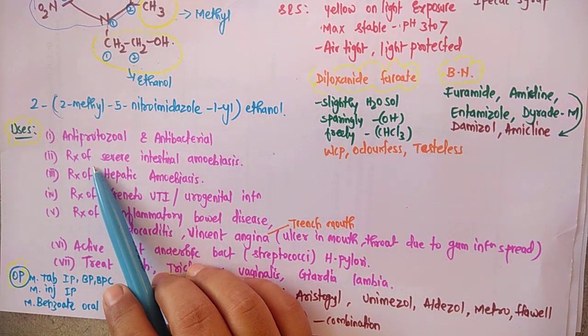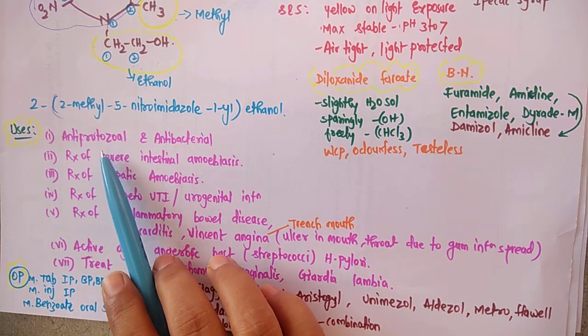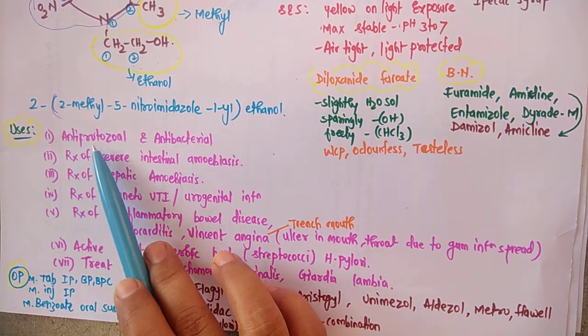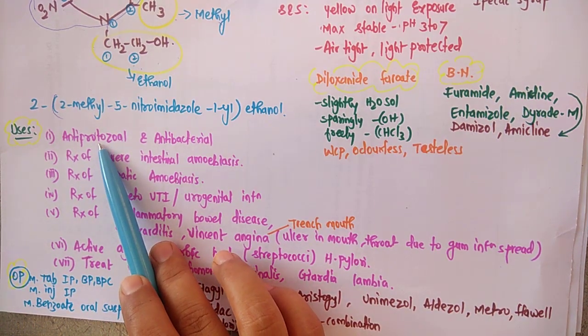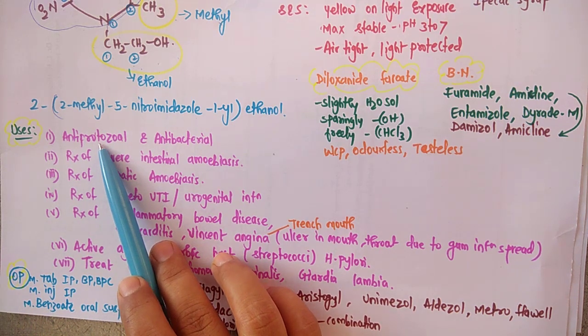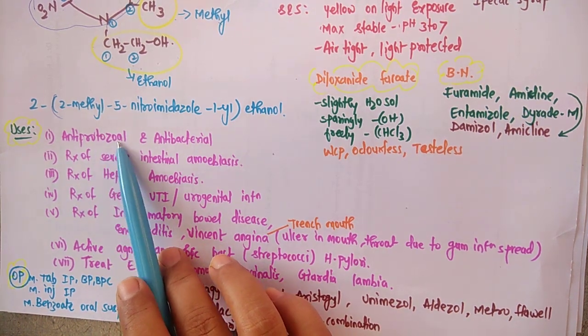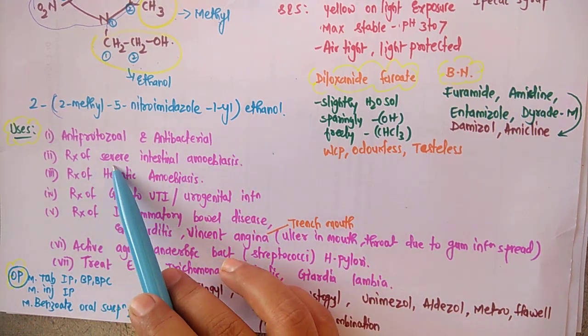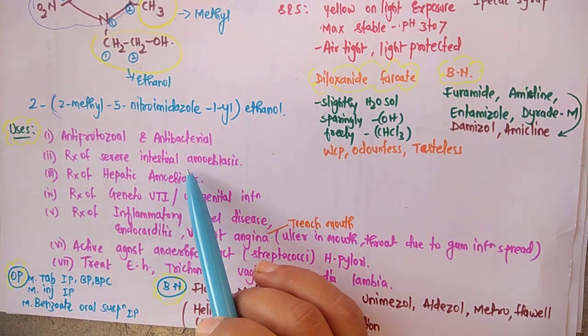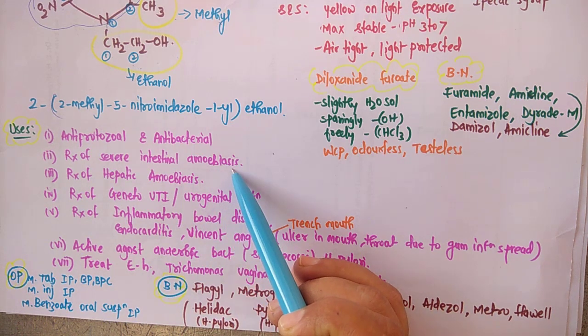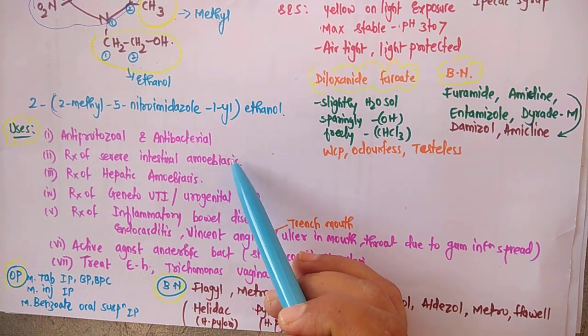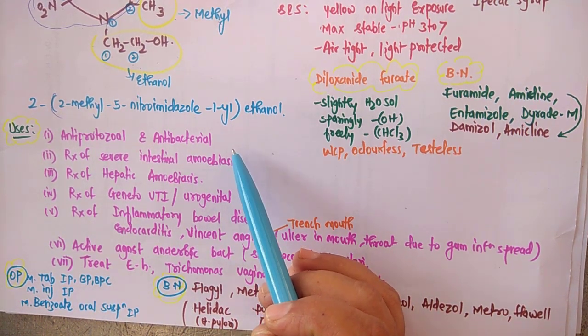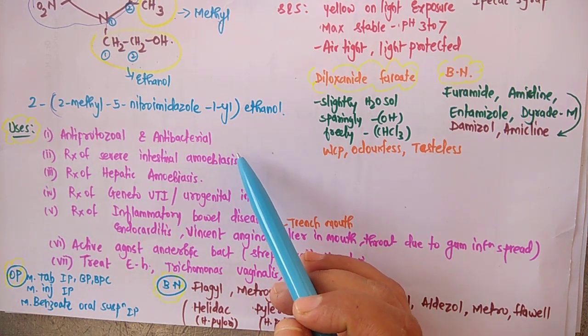Coming towards the uses of nitroimidazole. Since it is an anti-amebic drug, it is used in treatment of amoebiasis. Entamoeba histolytica is a protozoal parasite, so it is anti-protozoal as well as antibacterial.